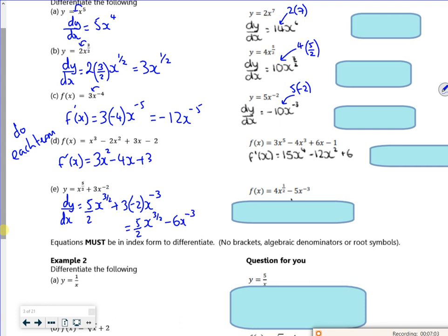So let's try this one. So you'd have 4 times a half, which is going to be 2, x to the minus a half, be careful, and then minus 5 times minus 3 is plus 15, x to the minus 4.